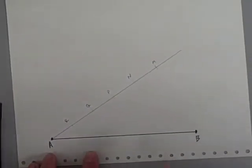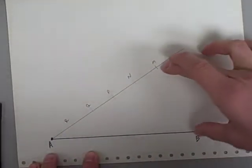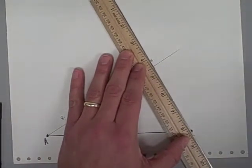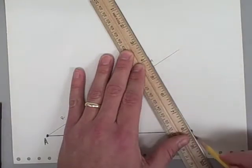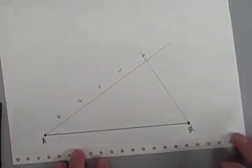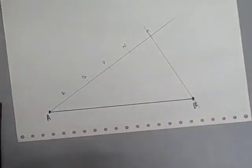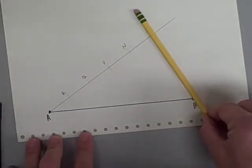Now step number one is I want to connect point M with B. And now to split up AB into five parts, we're going to copy this line. We're going to make a line parallel through N,